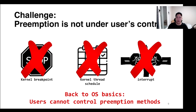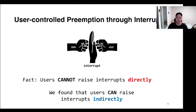However, there are rules for using these methods, because ordinary kernel exploits are intended for elevation to root privileges in user mode, so they must be available in user mode. If you go back to OS basics, users cannot control the preemption method. So users cannot use breakpoints to extend the time window — it needs root privilege. Likewise, users cannot use the scheduler, and users cannot send interrupts directly. However, we found a very interesting aspect: users cannot send interrupts directly, but users can use them indirectly.